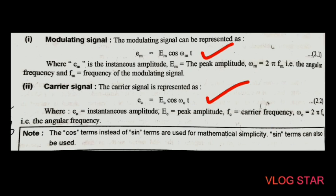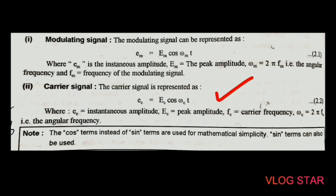For the carrier signal, the peak amplitude is E_c, which is again the peak amplitude. F_c represents the carrier frequency, and ω_c = 2π f_c, which is the angular frequency. Here we are using the cosine term; instead of cosine we can also use the sine term.